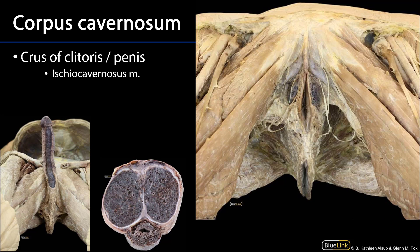The corpus cavernosum derivatives include, for the clitoris, the crura of the clitoris, which are going to be in association with the ischiopubic rami. We can see there is the left crus and the right crus. The crura are going to come together along the midline to participate as part of the shaft or body of the clitoris.